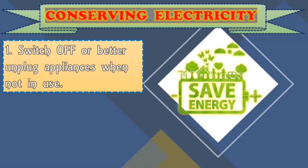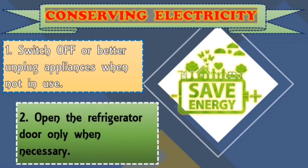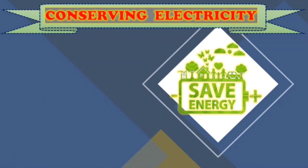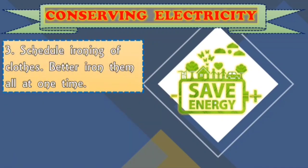Number two is open the refrigerator door only when necessary. Bakit ganon? Kasi each time its door is open, the more amount of electricity is used to make the refrigerator cool. So kapag open ka pala ng open doon sa refrigerator ninyo, lalong dumadami ang bill ng inyong kuryente. Number three is schedule ironing of clothes or better iron them all at one time. Kasi kapag isa-isa everyday, of course magko-consume yun ng electricity.